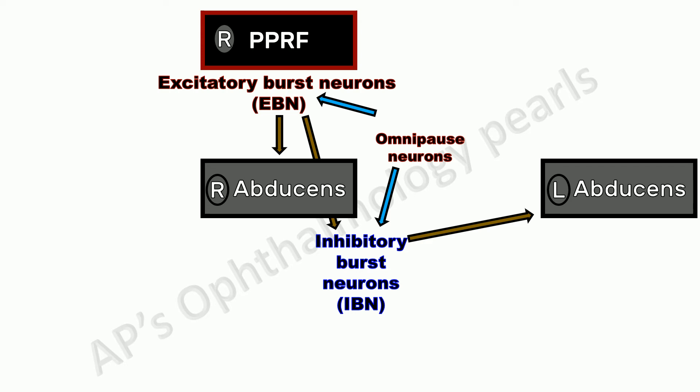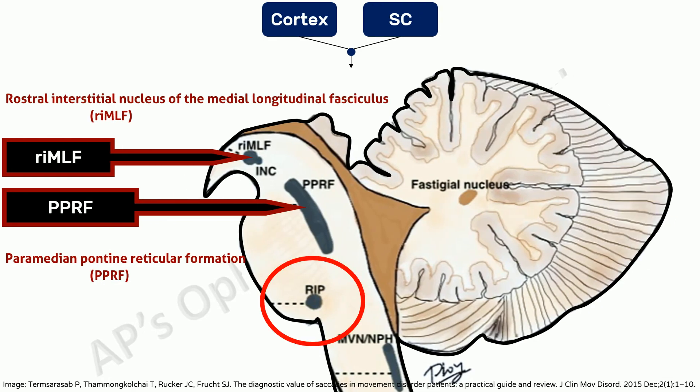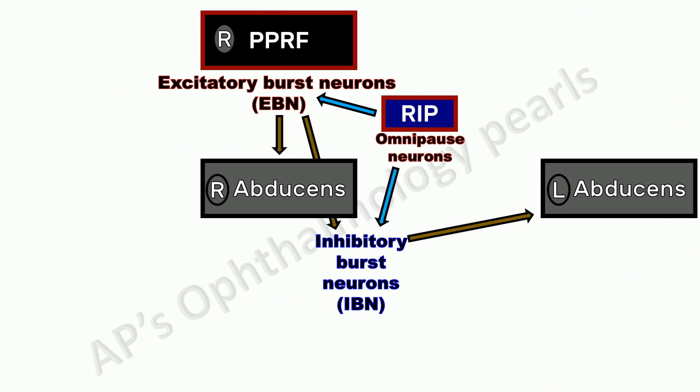The omnipause neurons are situated in the nucleus raphe interpositus, caudal to the abducens nucleus in the rostral medulla. The ipsilateral abducens nucleus projects to the ipsilateral lateral rectus via the abducens nerve, and via interneurons and the medial longitudinal fasciculus to the contralateral medial rectus — as discussed in my previous video on horizontal gaze pathway — to produce an ipsilateral saccade.